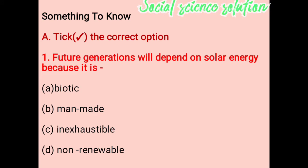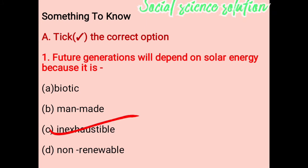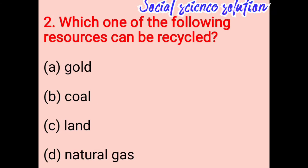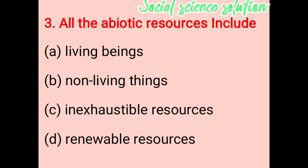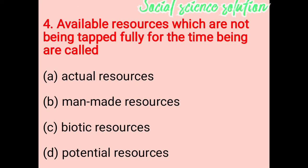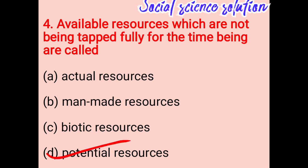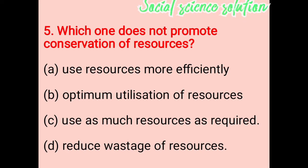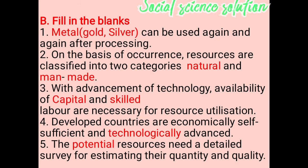Tick the correct option. Future generation will depend on solar energy because it is inexhaustible. Which one of the following resource can be recycled? Gold. All abiotic resources include non-living things. Available resources which are not being used fully at present are called potential resources. Which one does not promote conservation of resources? Use as much resource as required.